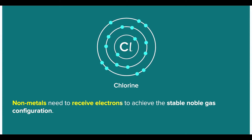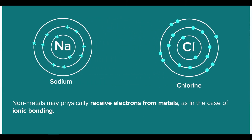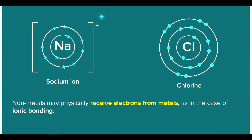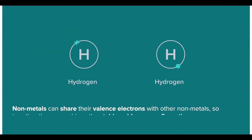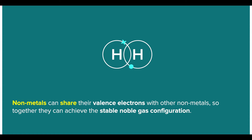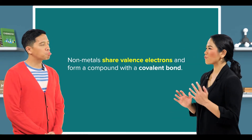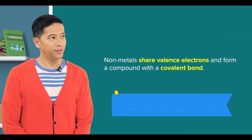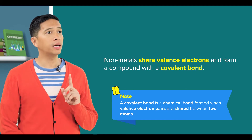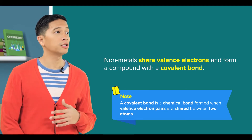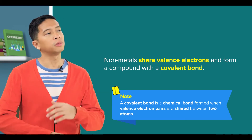Non-metals need to receive electrons to achieve the stable noble gas configuration. Non-metals may receive electrons from metals, as in the case of ionic bonding. Alternatively, non-metals can share their valence electrons with other non-metals, so together they can achieve the stable noble gas configuration. Non-metals share valence electrons and form a compound with a covalent bond. Yes, a covalent bond is a chemical bond formed when valence electron pairs are shared between two atoms.